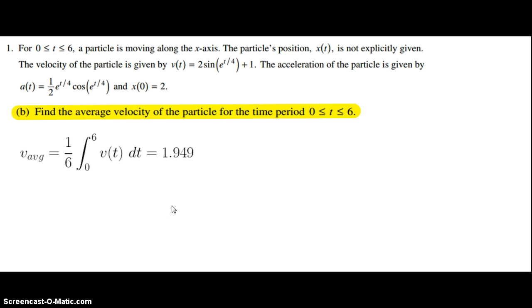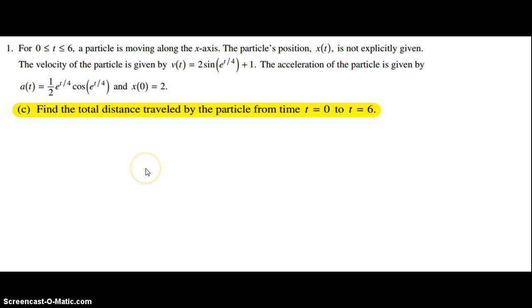That concludes Part B. Part C: Find the total distance traveled by the particle from time t = 0 to t = 6. Displacement is actually the integral of the velocity function. Distance is its scalar equivalent, so that's going to be absolute value.